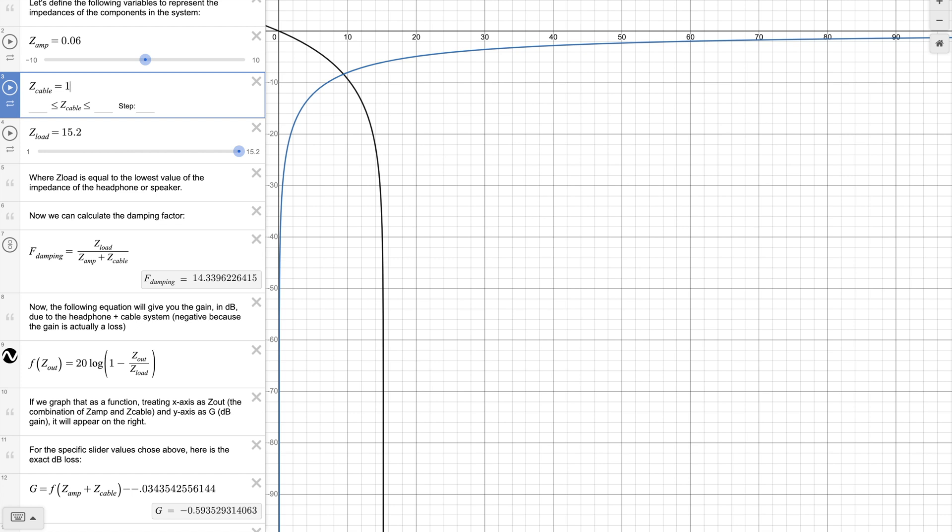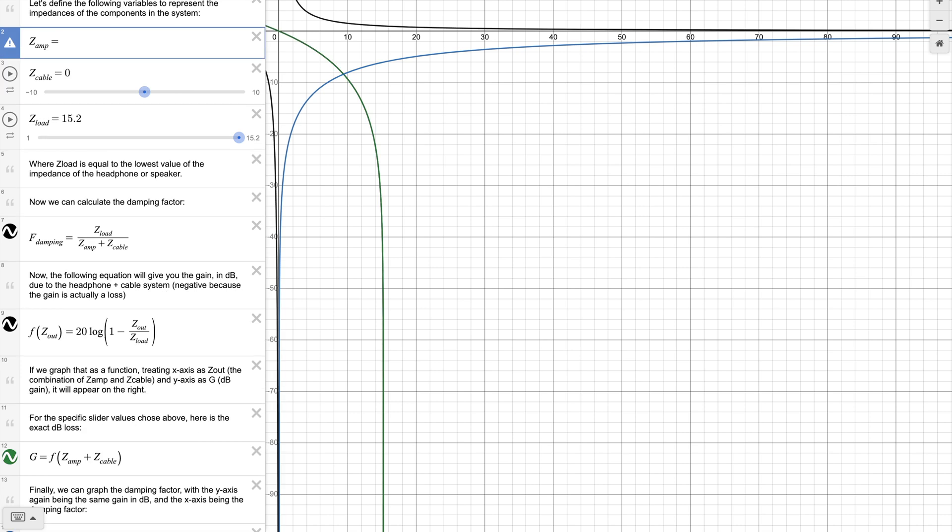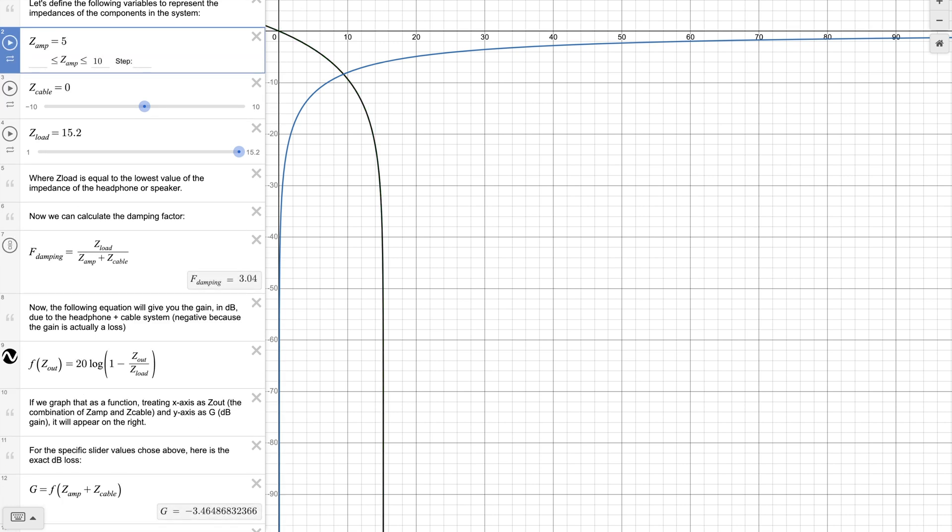With a 0.06 ohm source, the drop in SPL from a 1 ohm cable is 0.59 dB. But if we have an amplifier that is 5 ohms, the drop in SPL is already 3.46 dB.